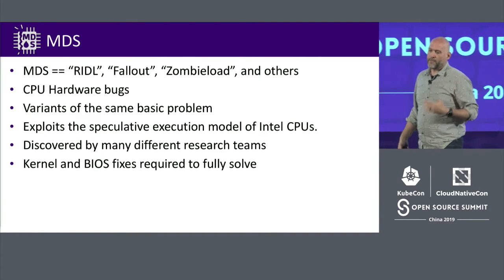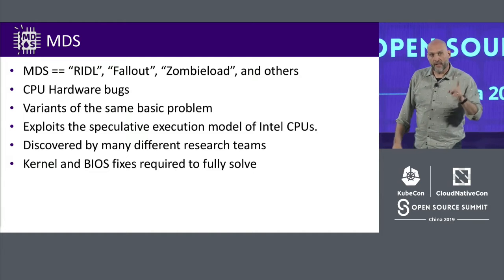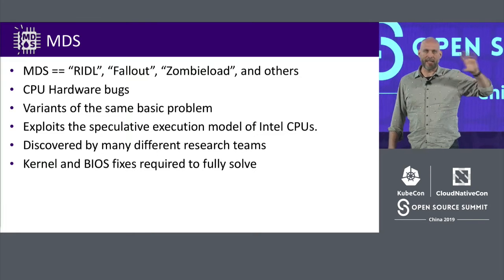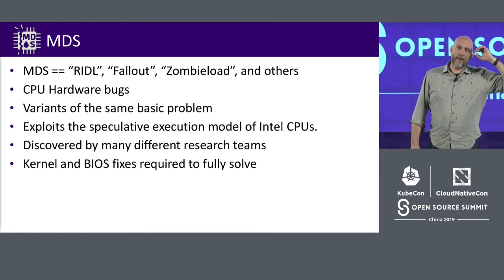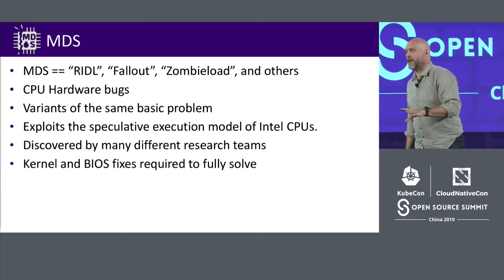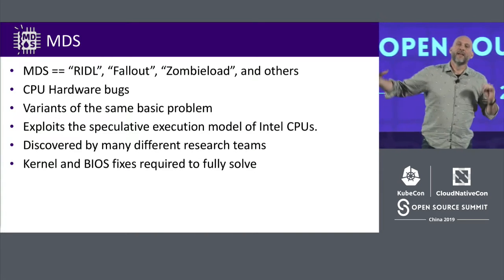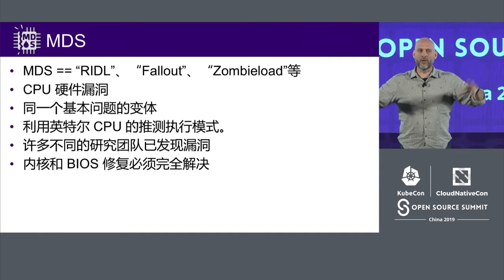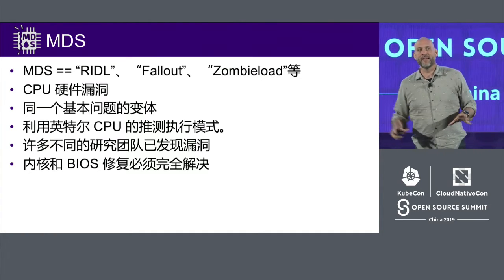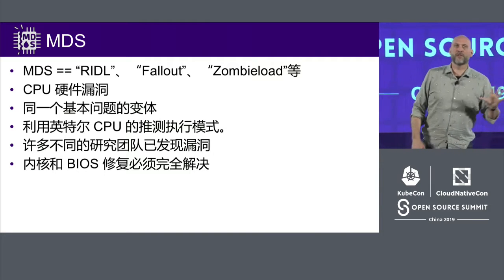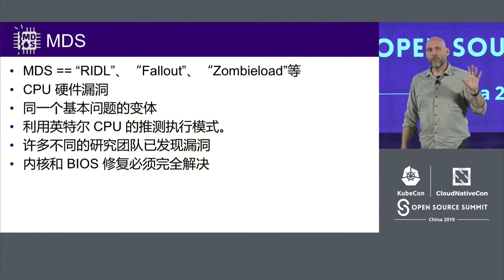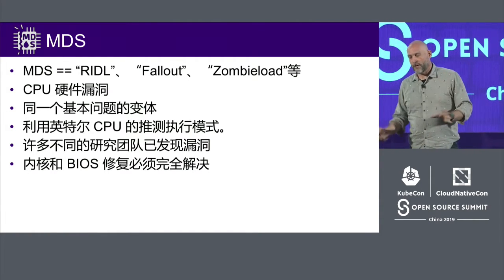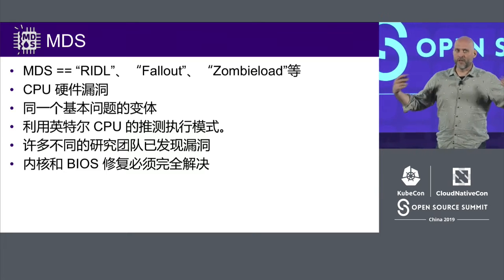These variants are all the same basic idea, and only Intel CPUs were found to have these problems. Researchers tested a lot of different chips, and multiple groups found these all at the same time independently. I think there were five different research groups that found the same problem within weeks of each other, which is amazing. Luckily they all worked together in the end, but that kind of convergence is also continuing to happen as researchers keep looking in this area.